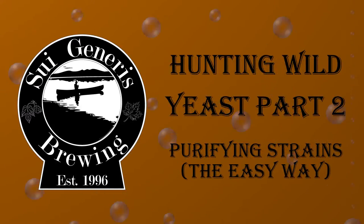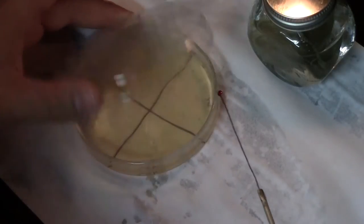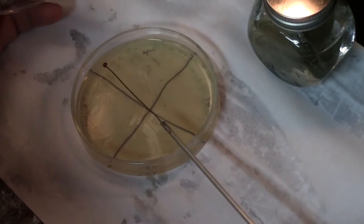Welcome to my next video. In my last video I showed a method called streak plating which can be used to get single colonies of yeast. This can be used to purify yeast from either a mixed ferment or from an infected ferment.